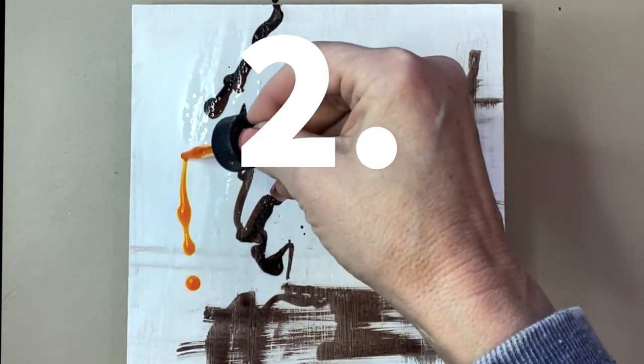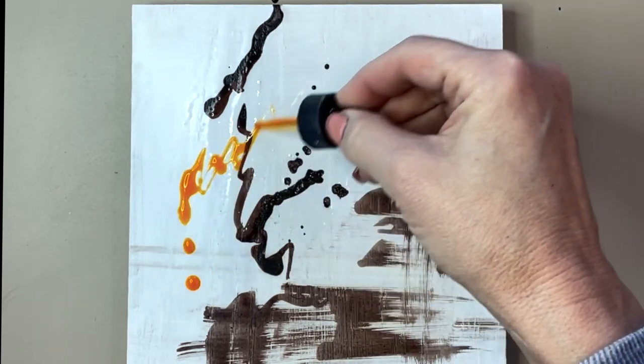Number two, you can apply ink directly to your encaustic surface. Let dry and fuse.